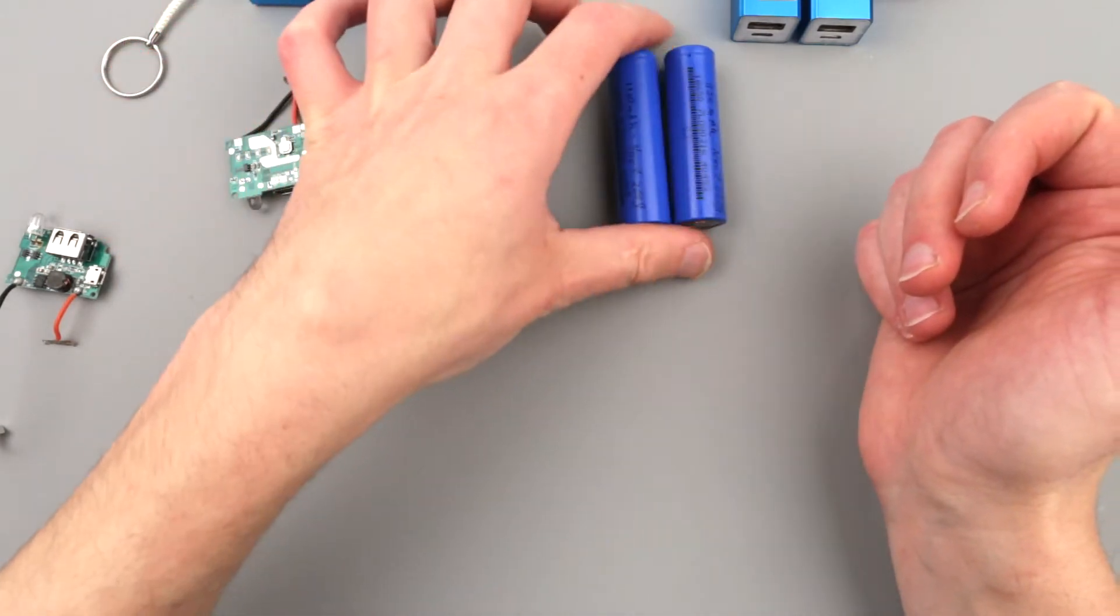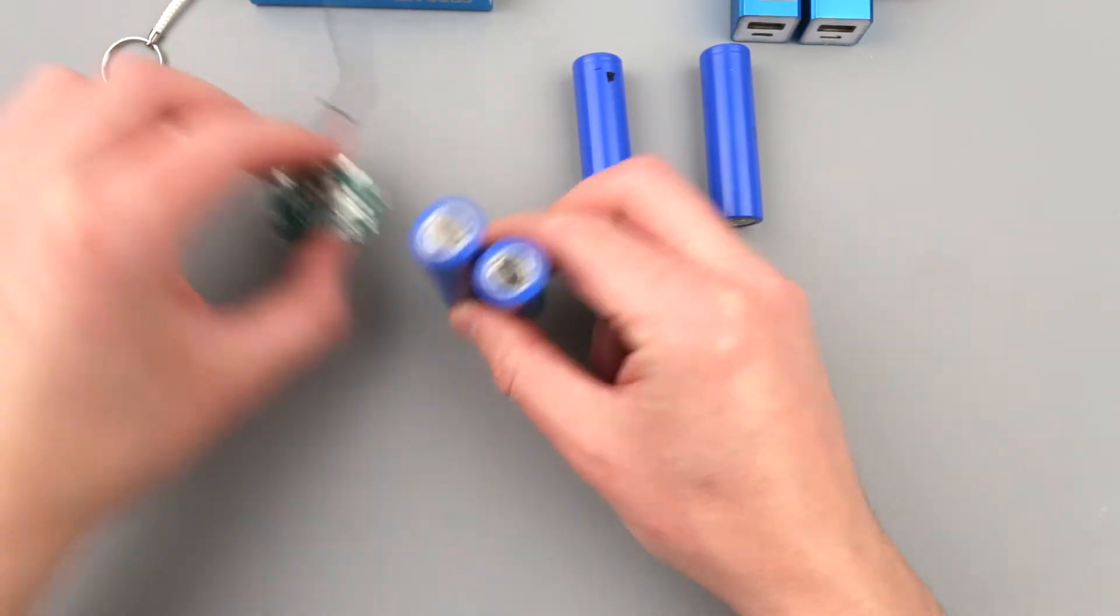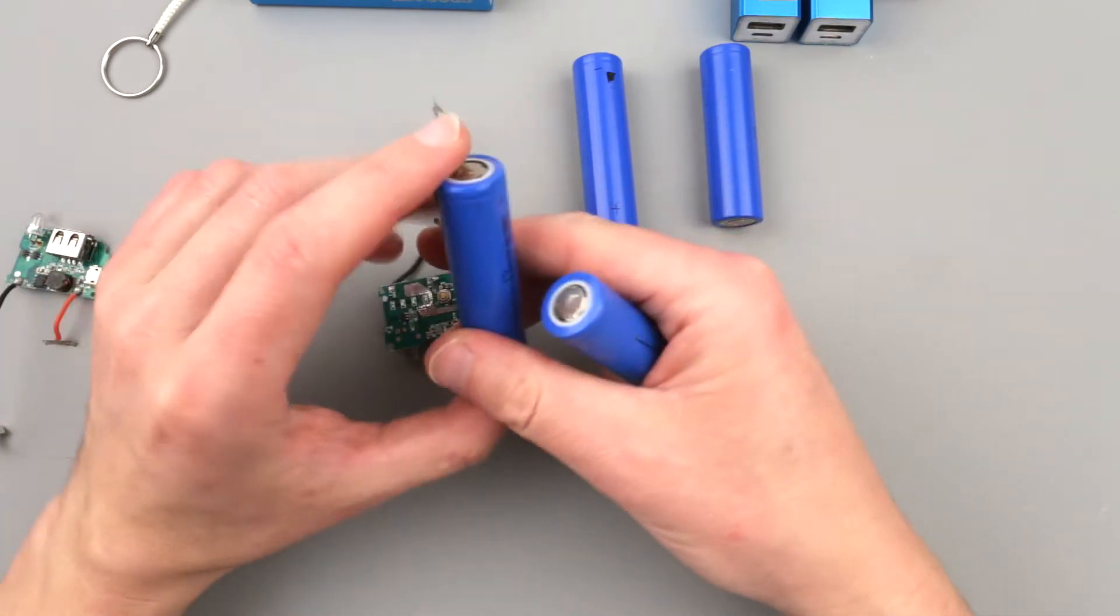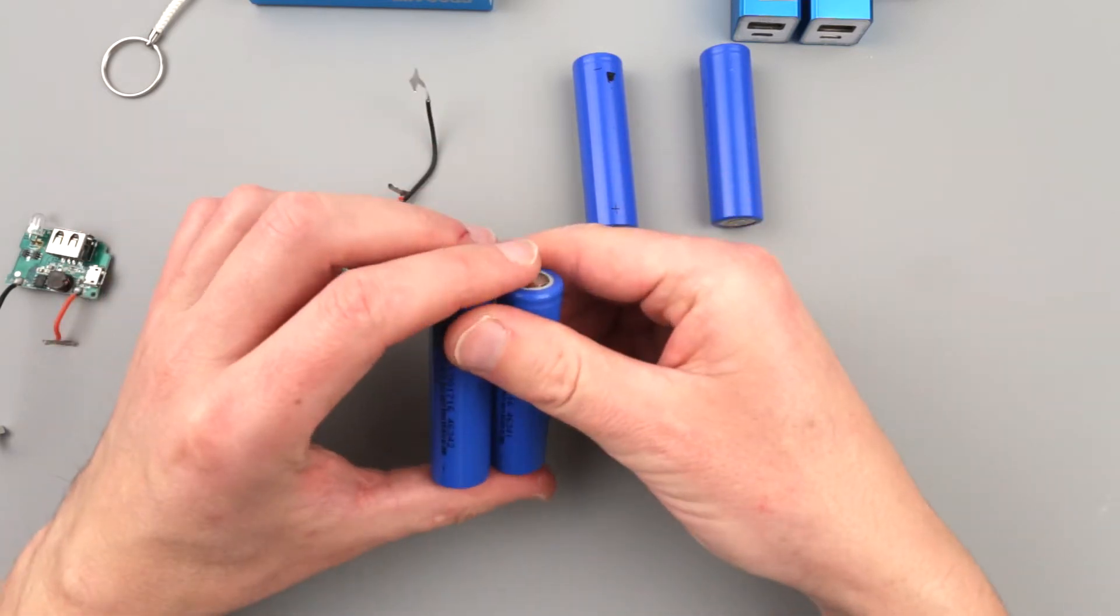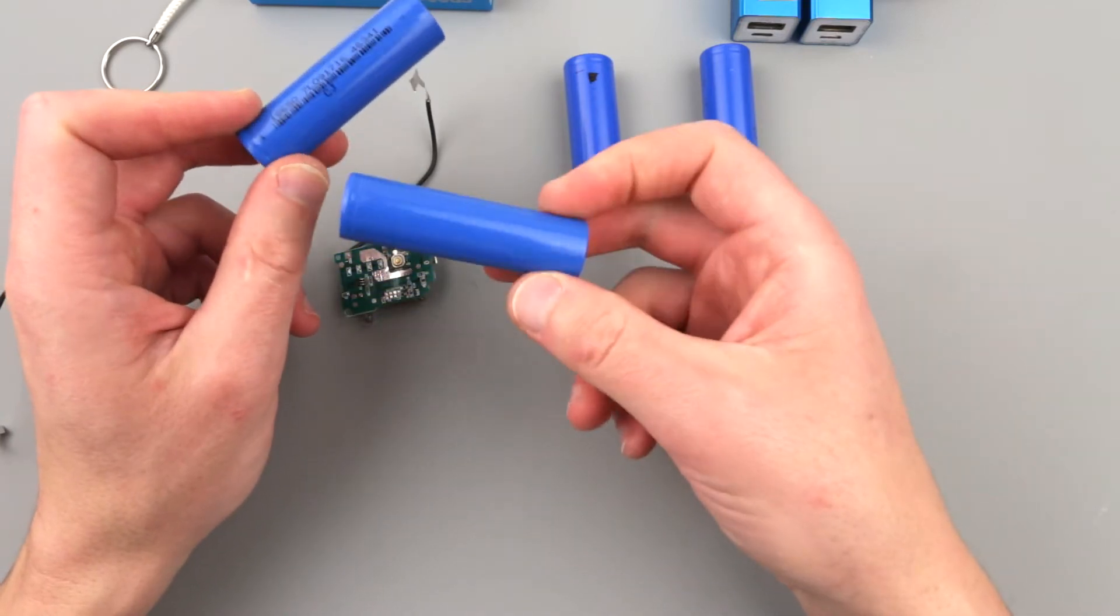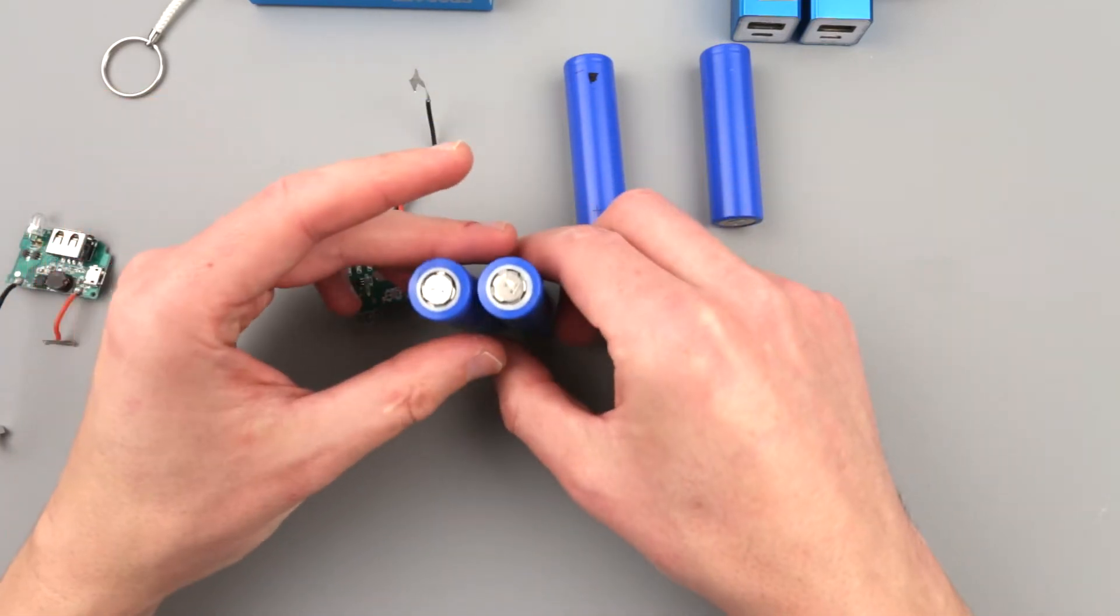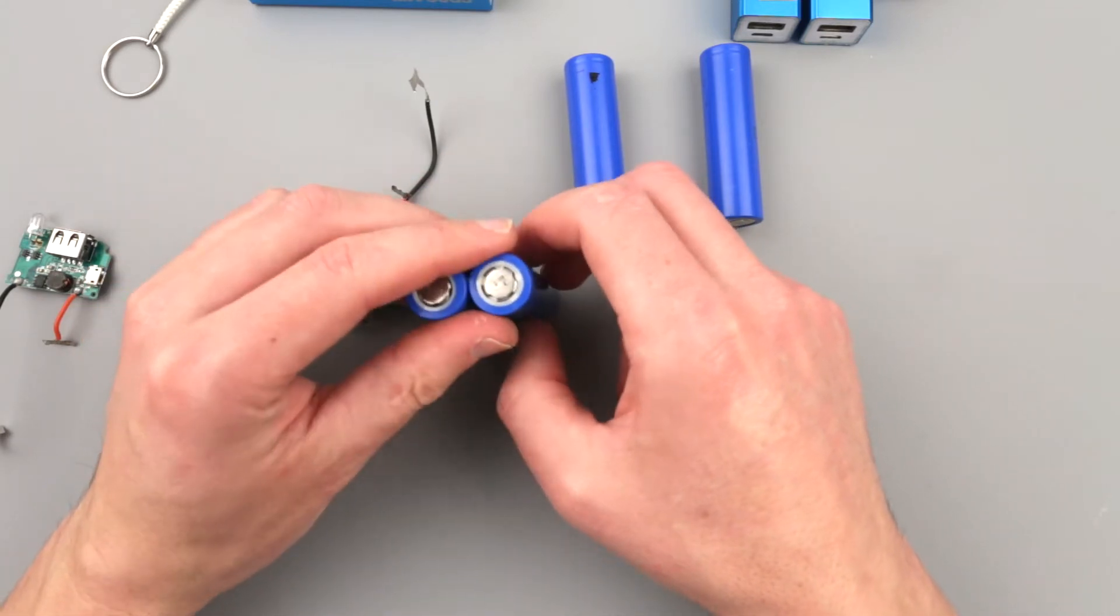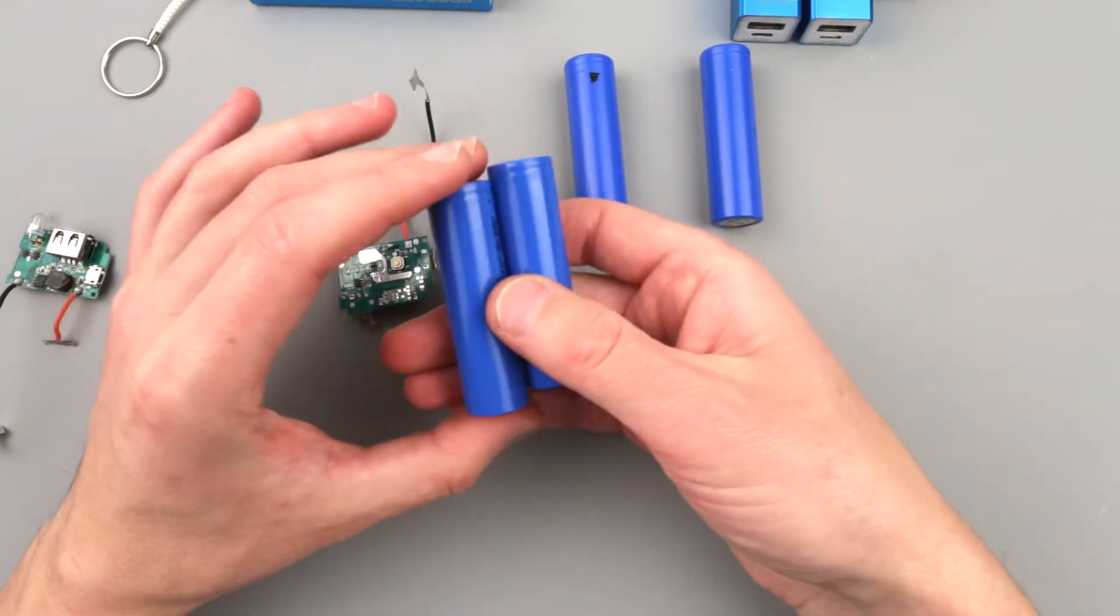Those dudes which were in the blue power bank are indeed craptacular or crap. One is 130 milliamp hours, another is 190. This is essentially game over. Yes, they do charge to 4.2 volts, but they just discharge to 3 volts really rapidly.